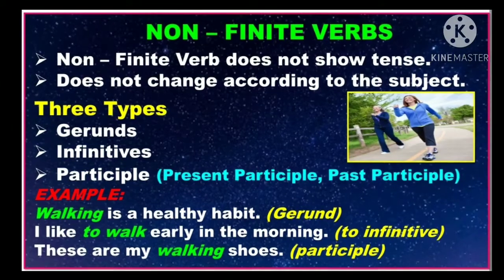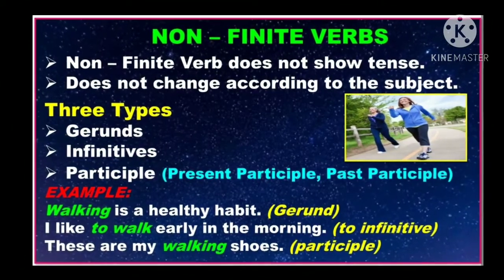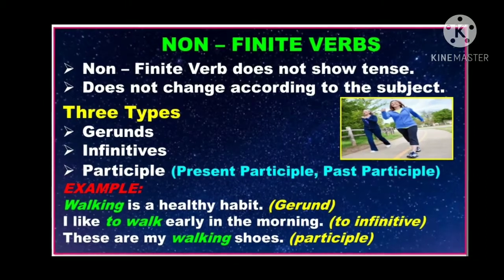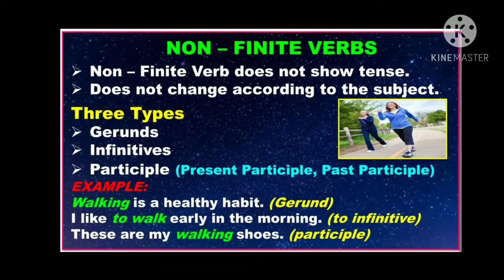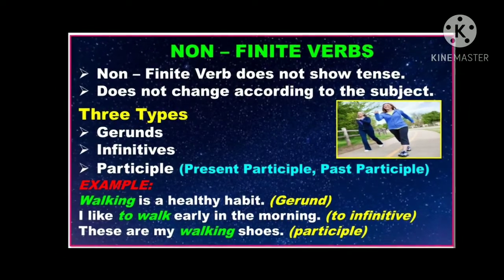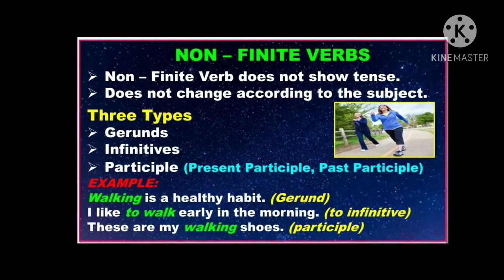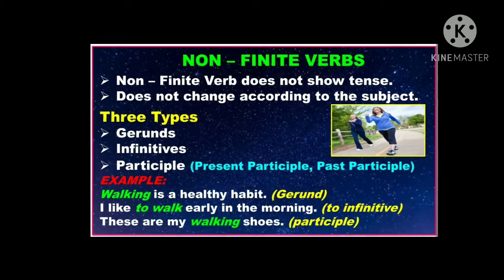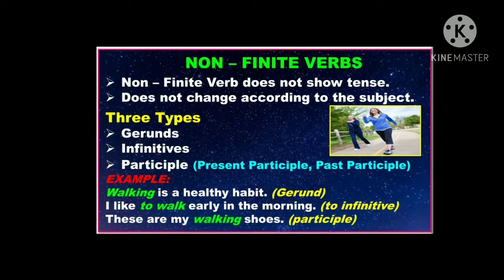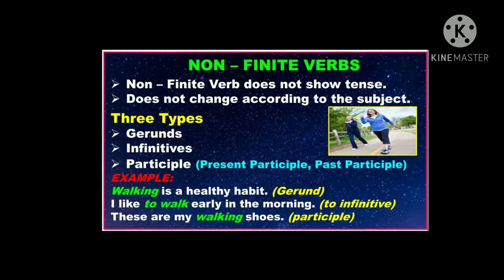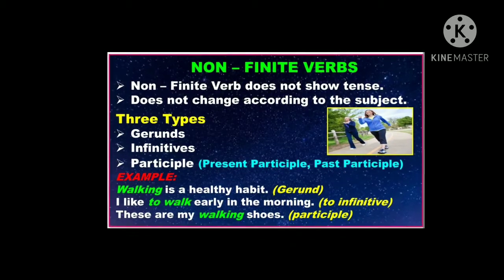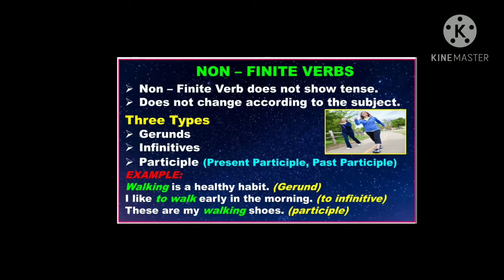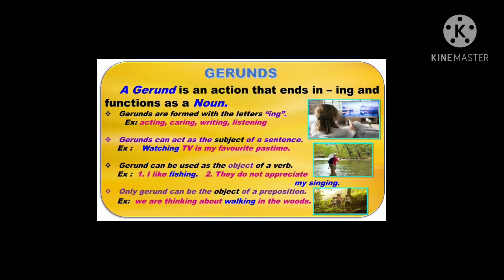The next one is non-finite verbs. A non-finite verb is a verb form that does not show tense. You cannot tell if a sentence is in the past, present or future tense by looking at a non-finite verb. There are three types of non-finite verb: gerunds, infinitive and participle. Examples: 'Walking is a healthy habit' — 'walking' is a gerund. 'I like to walk early in the morning' — 'to walk' is an infinitive. 'These are my walking shoes' — 'walking' is a participle.